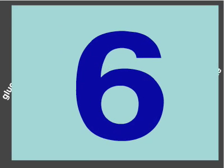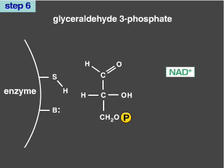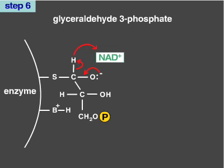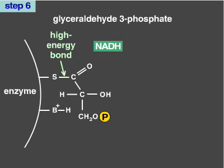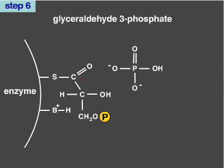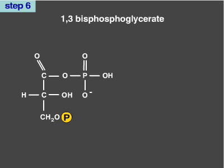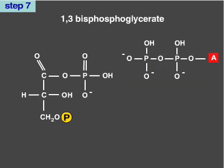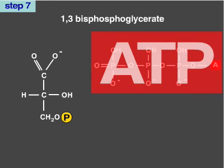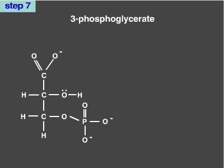In step 6, the enzyme glyceraldehyde-3-phosphate dehydrogenase uses NAD+ to oxidize glyceraldehyde-3-phosphate. The resulting molecule is connected to the enzyme by a high-energy thioester bond. A molecule of inorganic phosphate displaces the high-energy thioester bond, forming a high-energy acyl-anhydride bond, and the resulting molecule is 1,3-bisphosphoglycerate. In the 7th step, the enzyme phosphoglycerate kinase dephosphorylates 1,3-bisphosphoglycerate, transferring the high-energy phosphate to ADP, forming ATP. The 3-carbon molecule is now 3-phosphoglycerate. Because this reaction occurs twice, a total of 2 ATPs are generated, and the energy investment from the first 3 steps has been paid back.